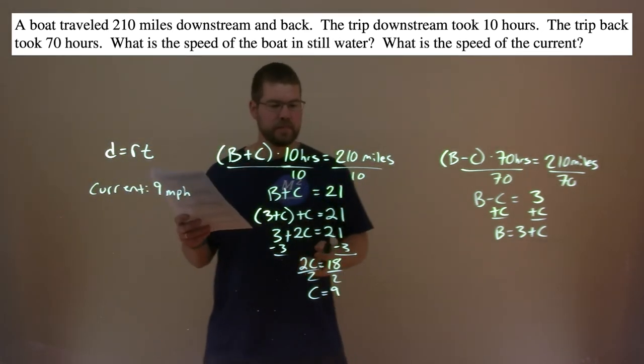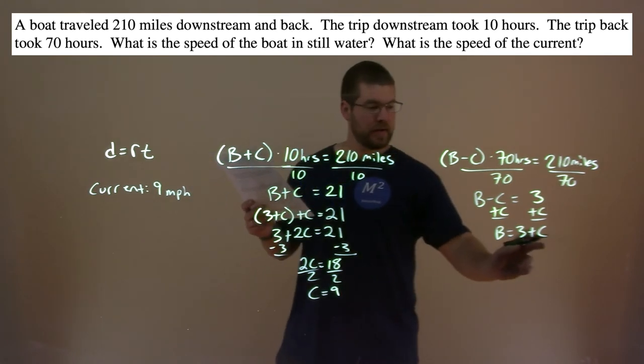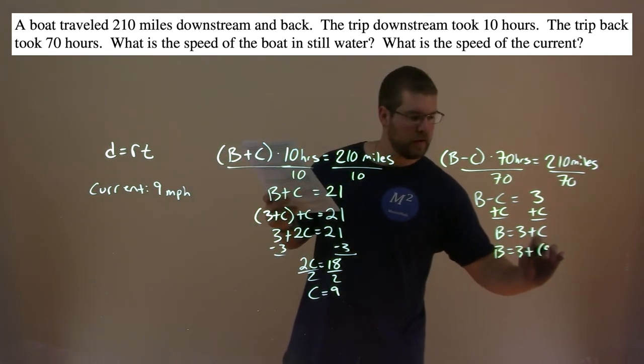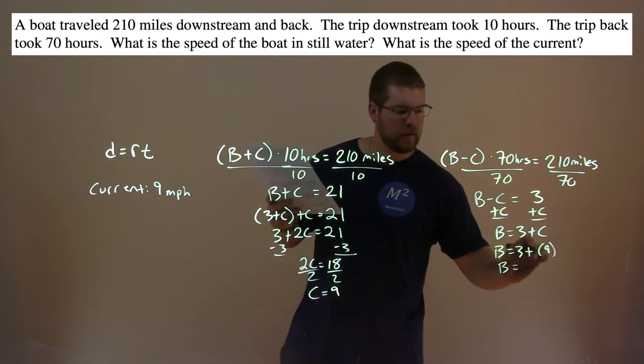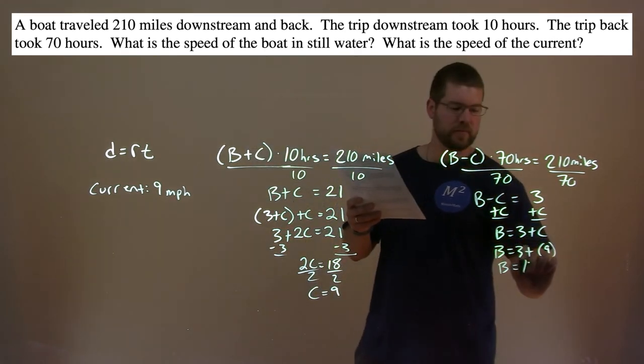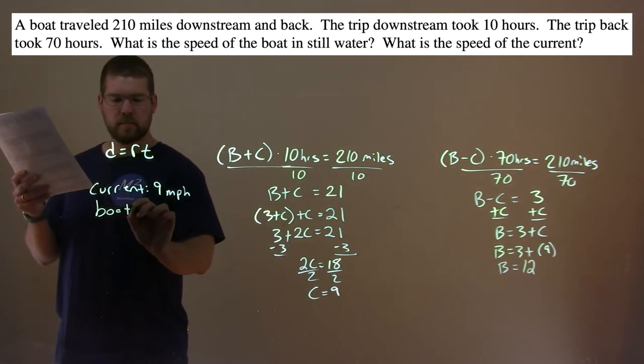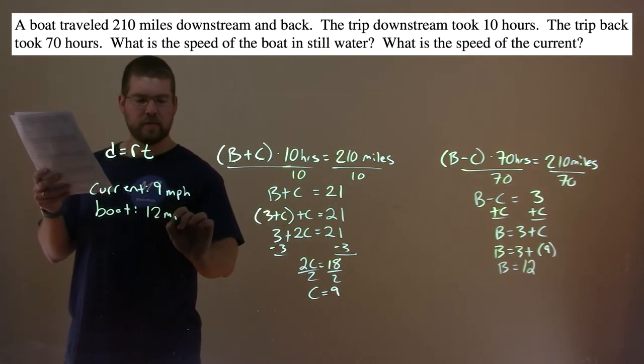Well, now we want to find the speed of the boat. So, we take that information and plug it in. And we'll say back here for the boat speed. Boat equals 3 plus, instead of C, put a 9. And 3 plus 9 is 12. So, the speed of the boat is 12 miles per hour.